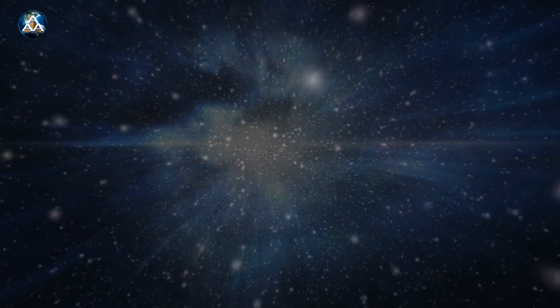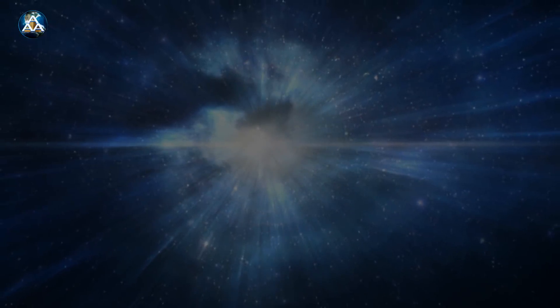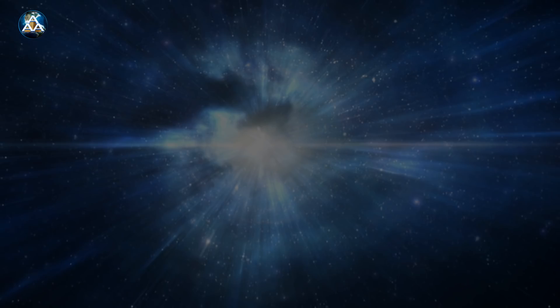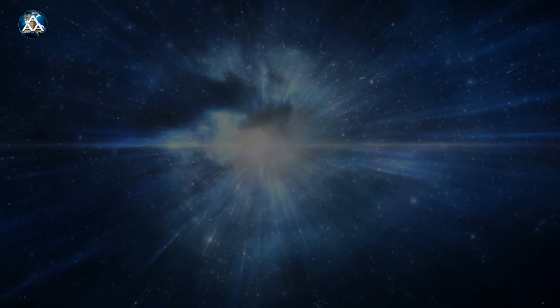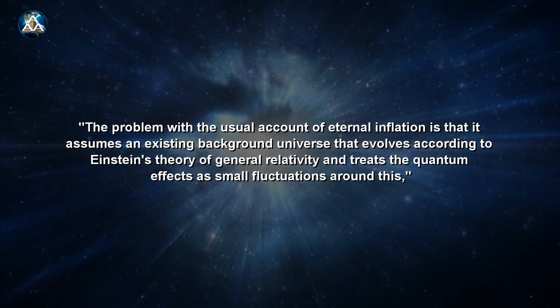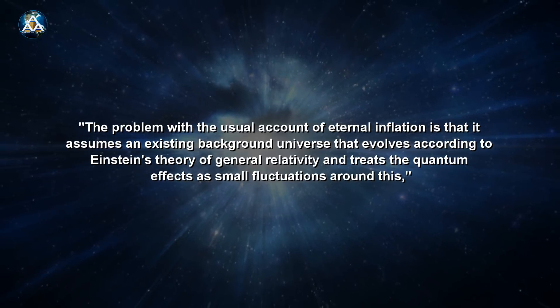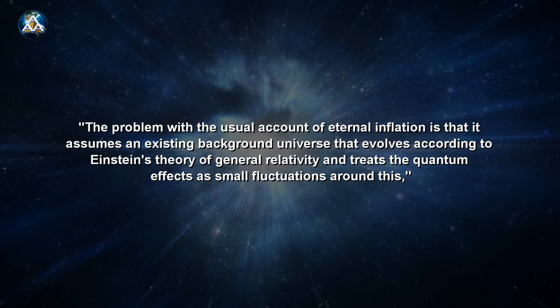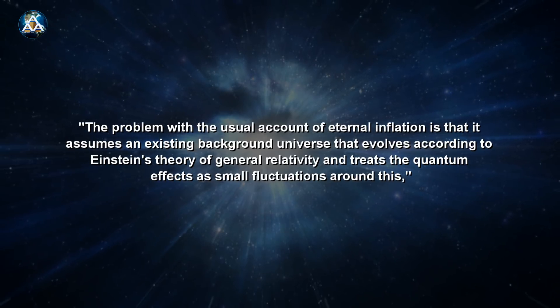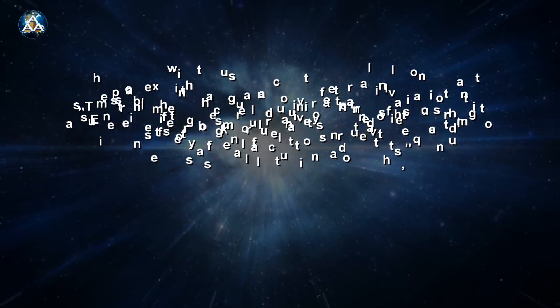Hawking and Hertog are now saying that the eternal inflation model is wrong. This is because Einstein's theory of general relativity breaks down on quantum scales. The problem with the usual account of eternal inflation is that it assumes an existing background universe that evolves according to Einstein's theory of general relativity and treats the quantum effects as small fluctuations around this, Hertog explained.